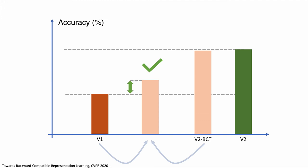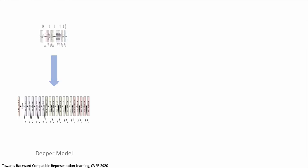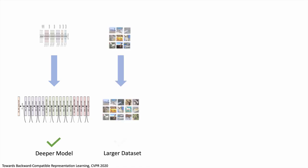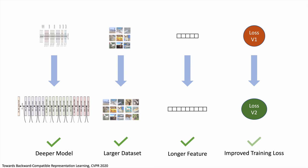We do not need to sacrifice search quality to achieve backward compatibility. More specifically, we find our method to be effective even against a combination of deeper architectures, larger training datasets, differences in length between old and new embeddings, and disparate changes of primary loss functions, such as softmax cross entropy versus center loss.